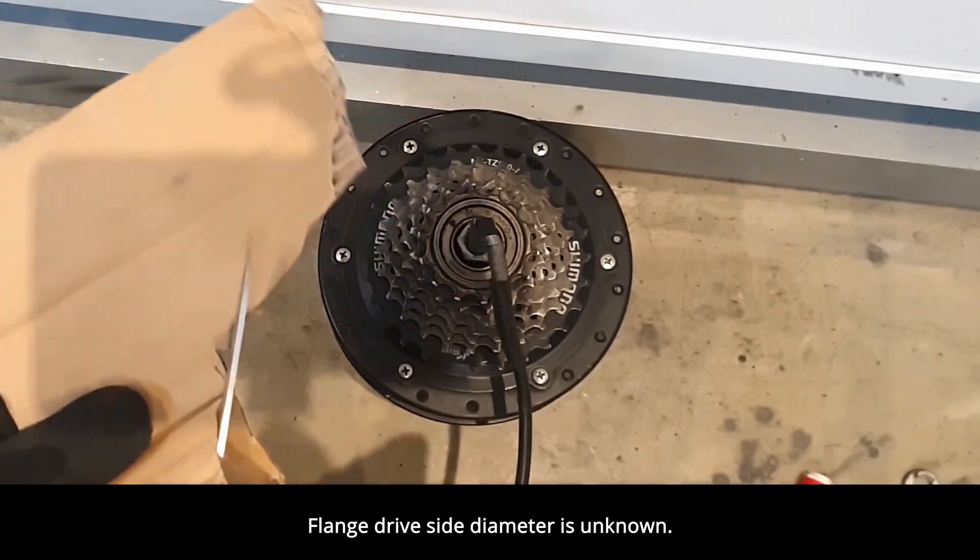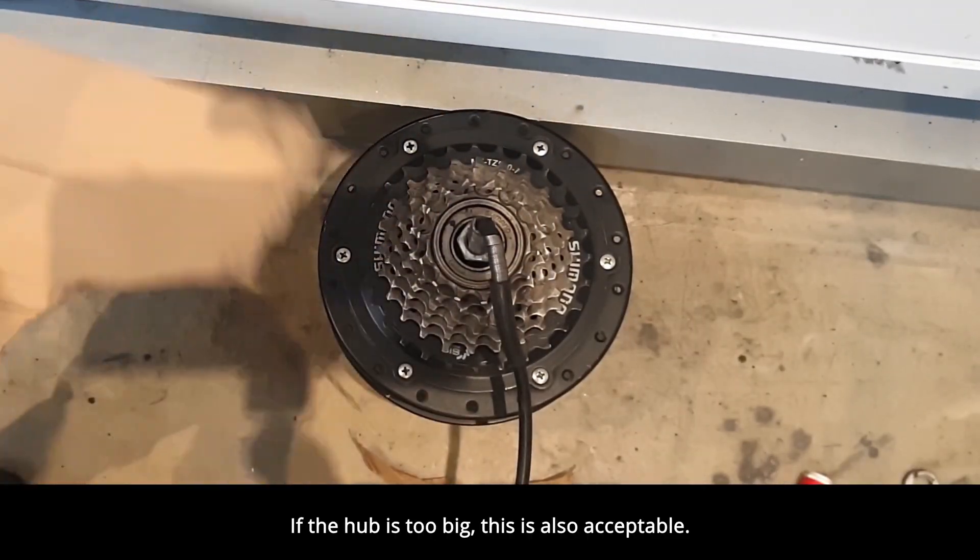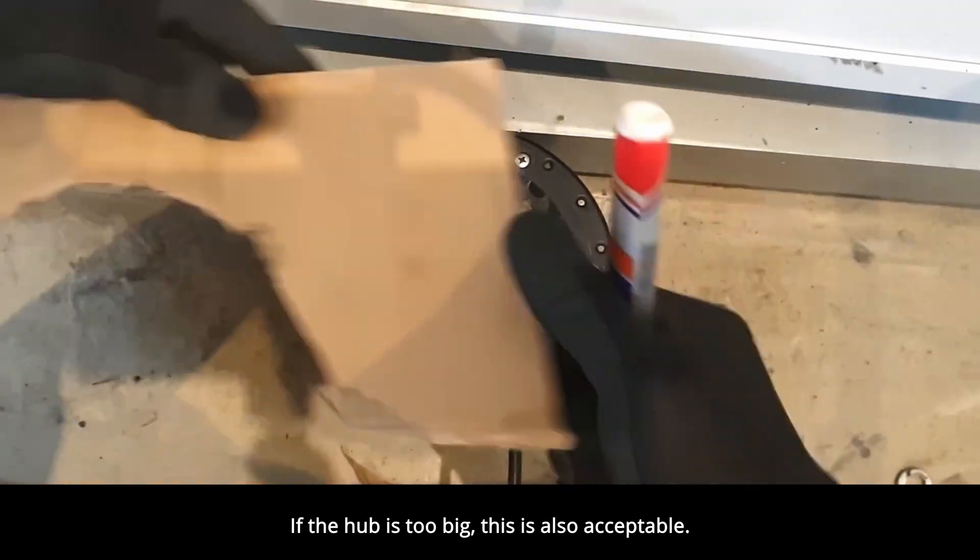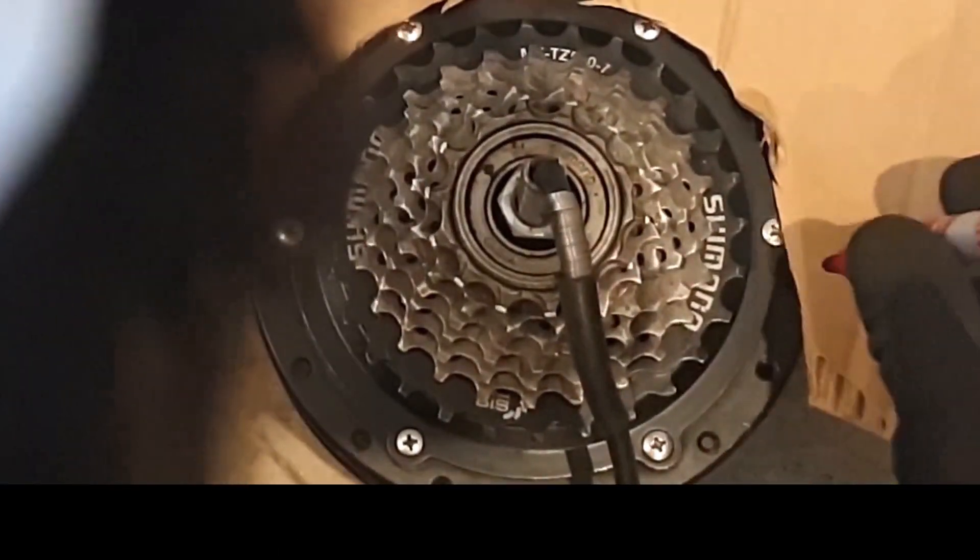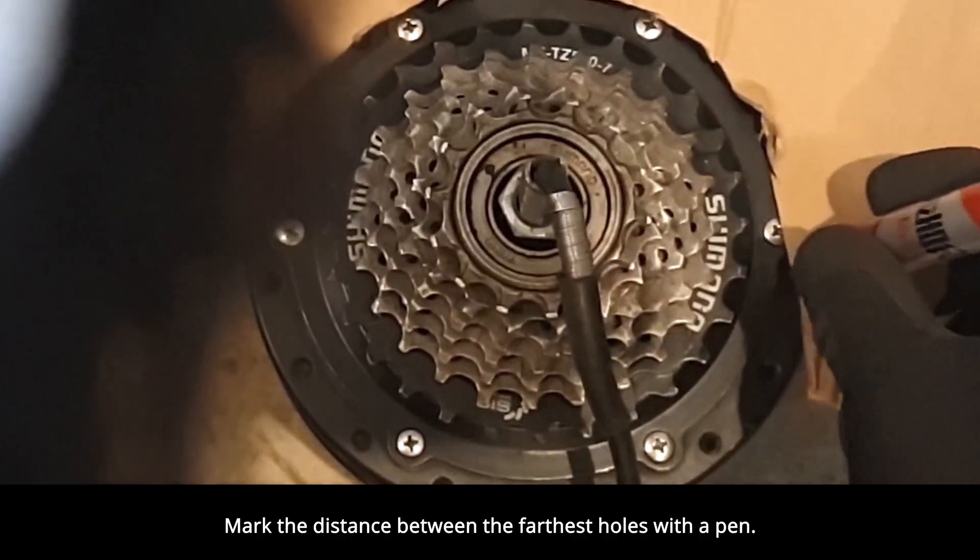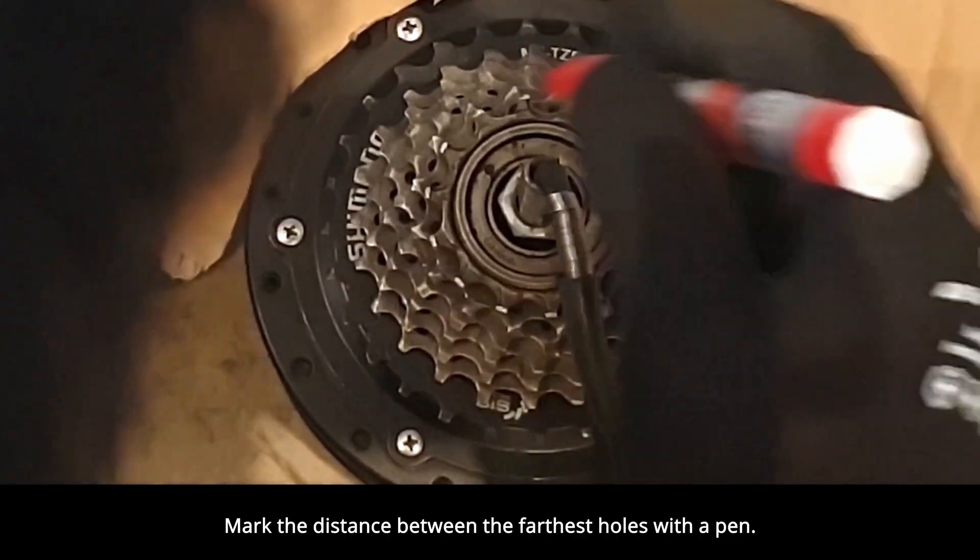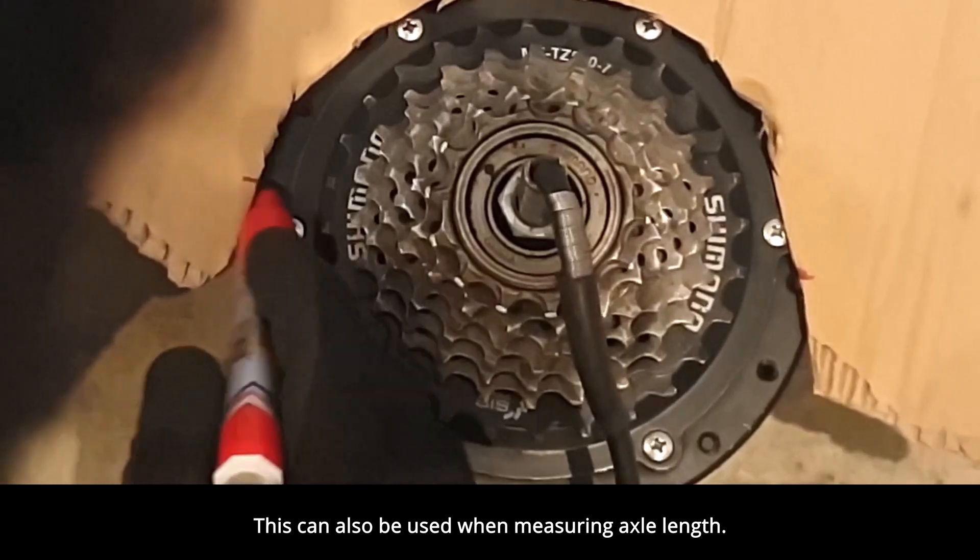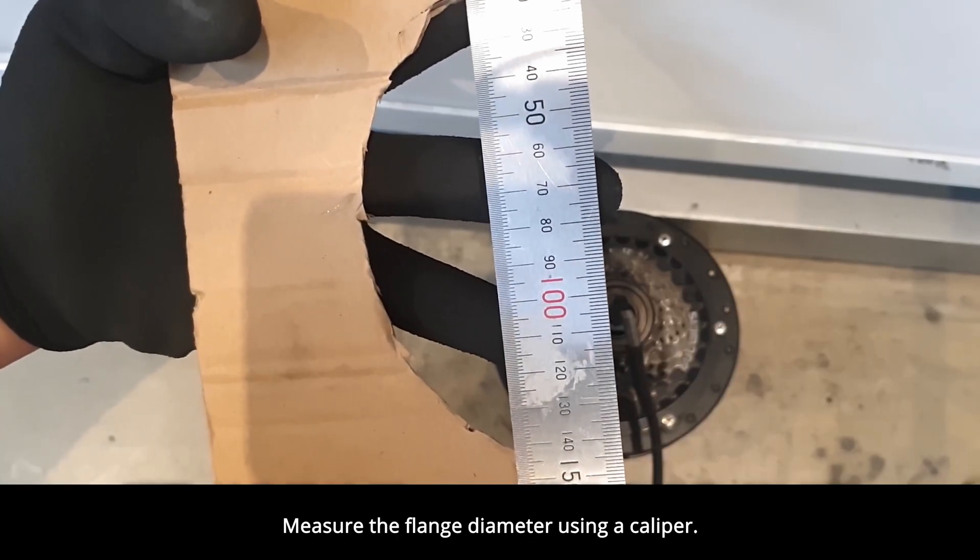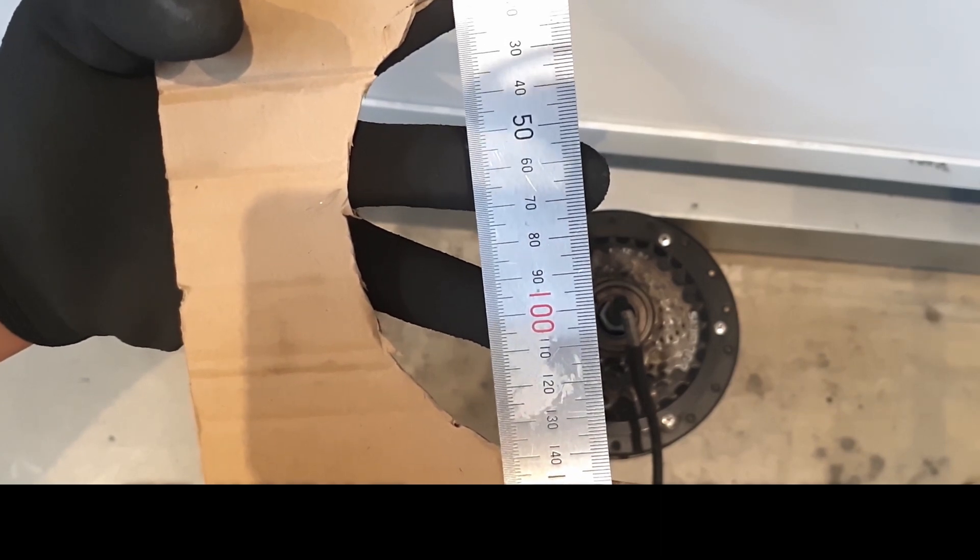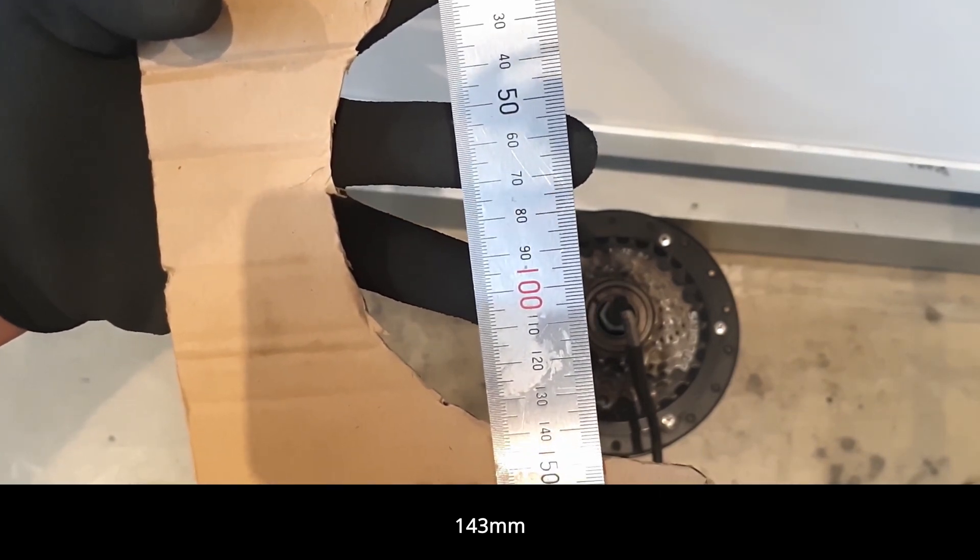Flange drive side diameter is unknown. If the hub is too big, this is also acceptable. Cut a piece of paper. Mark the distance between the farthest holes with a pen. This can also be used when measuring axle length. Measure the flange diameter using a caliper. 143 millimeters.